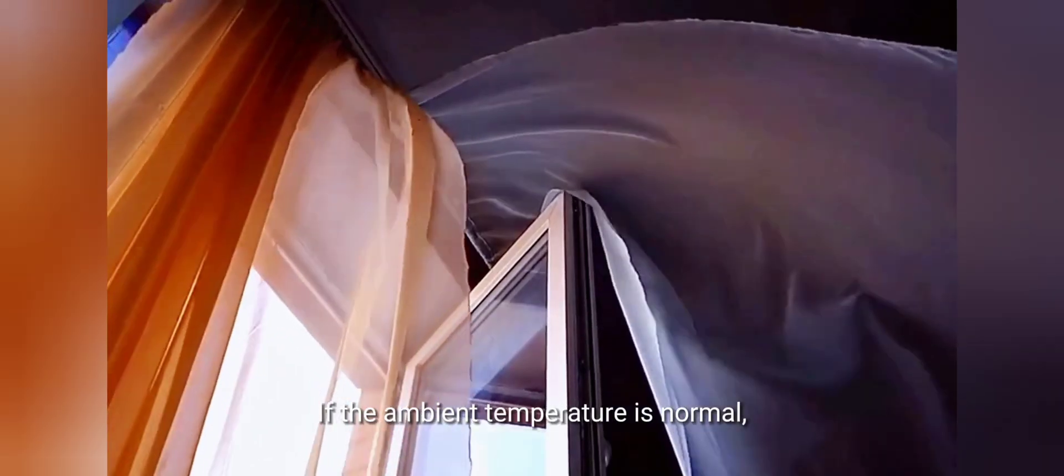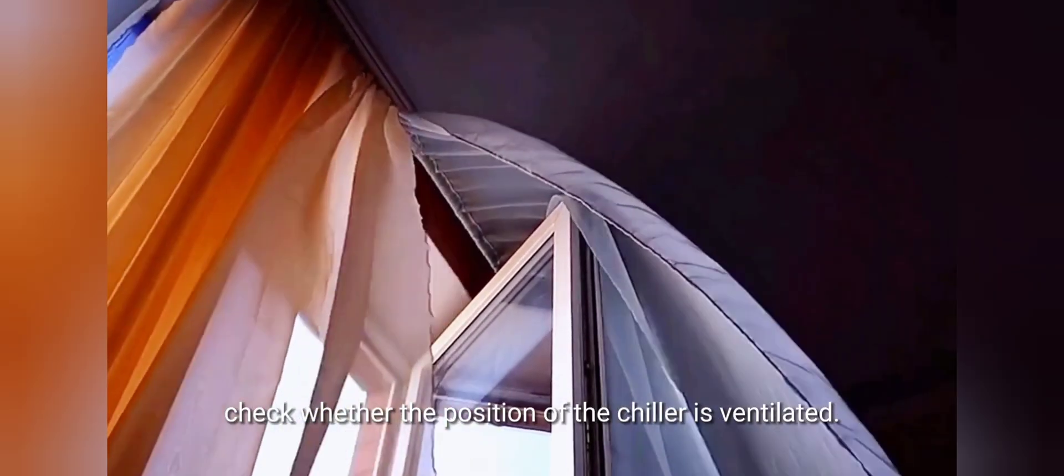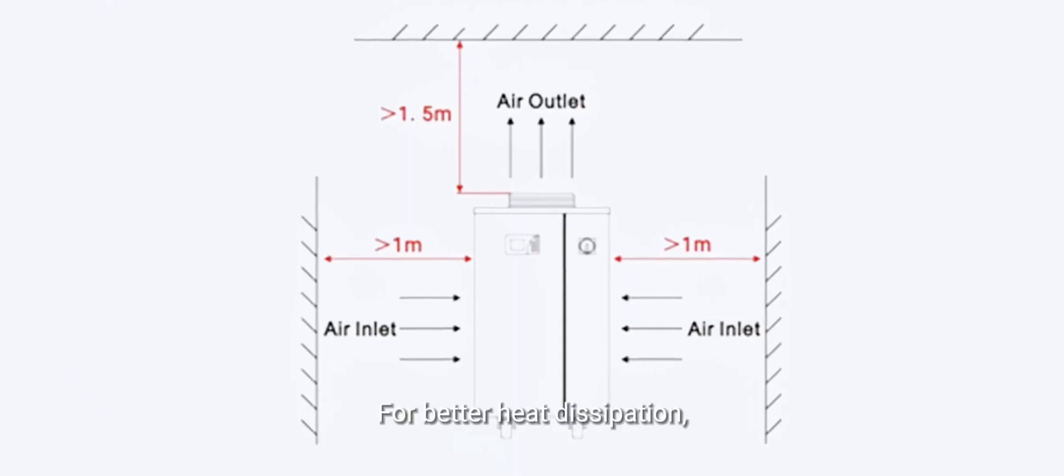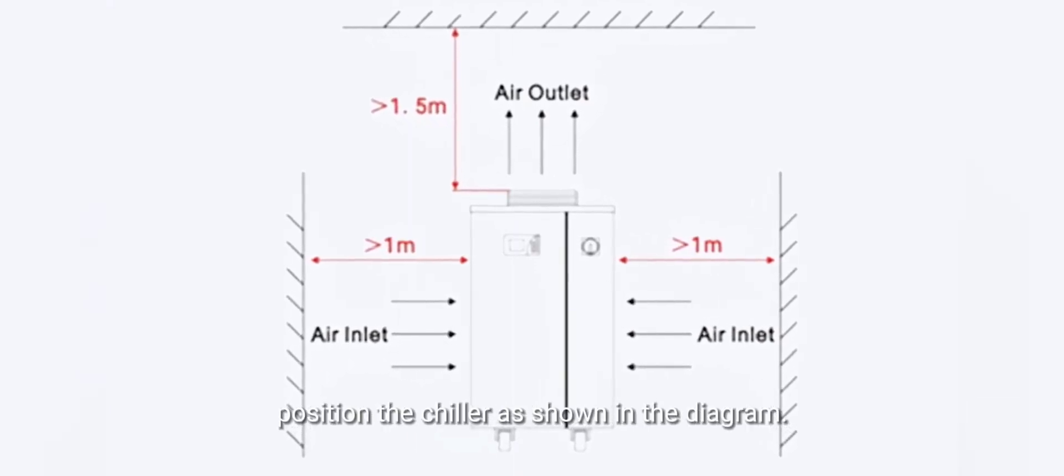If the ambient temperature is normal, check whether the position of the chiller is ventilated. For better heat dissipation, position the chiller as shown in the diagram.